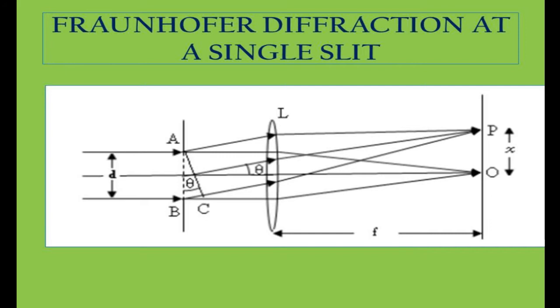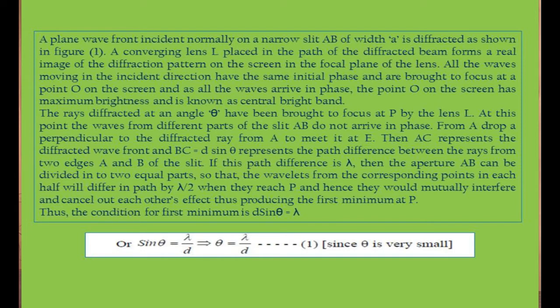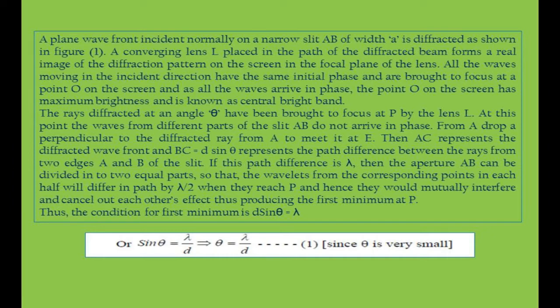This angle theta equals angle BAC — the light diffracted in the direction theta. Let F be the focal length of the lens and OP = X, the distance of the point of diffraction from the center point. The separation of the slit, or slit width, is small d. From the geometry, the distance BC is equal to d sin θ.